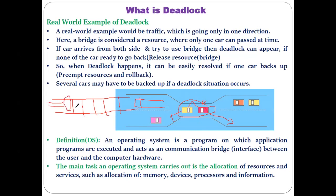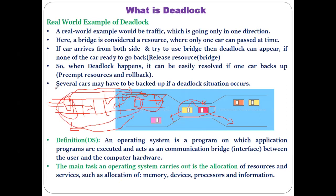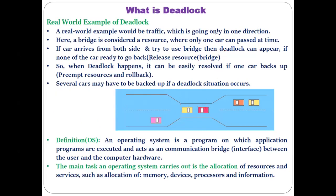Neither train will be able to pass from one side to the other. An accident may occur if none of the trains releases the resource — the railway track. If one train goes back and releases the track, the other can use it. But if both trains are not ready to go back, a halted situation occurs — that is called deadlock.